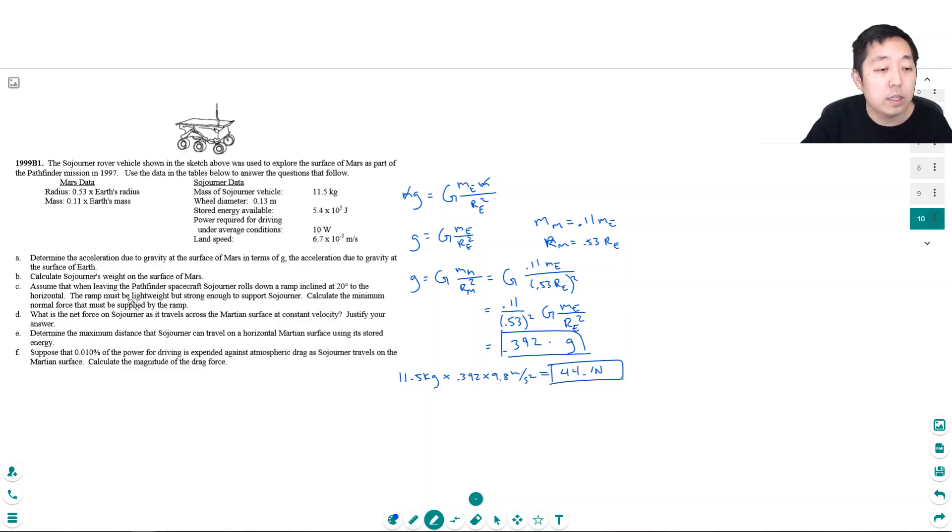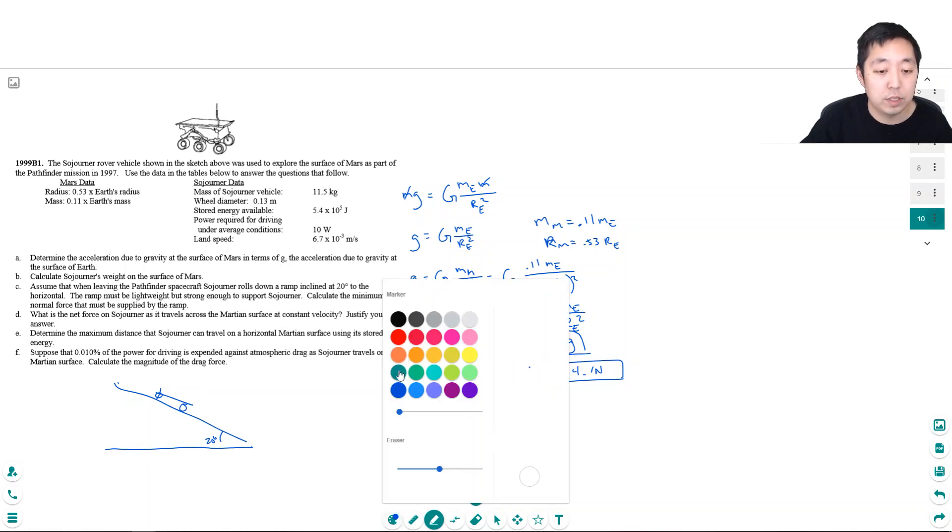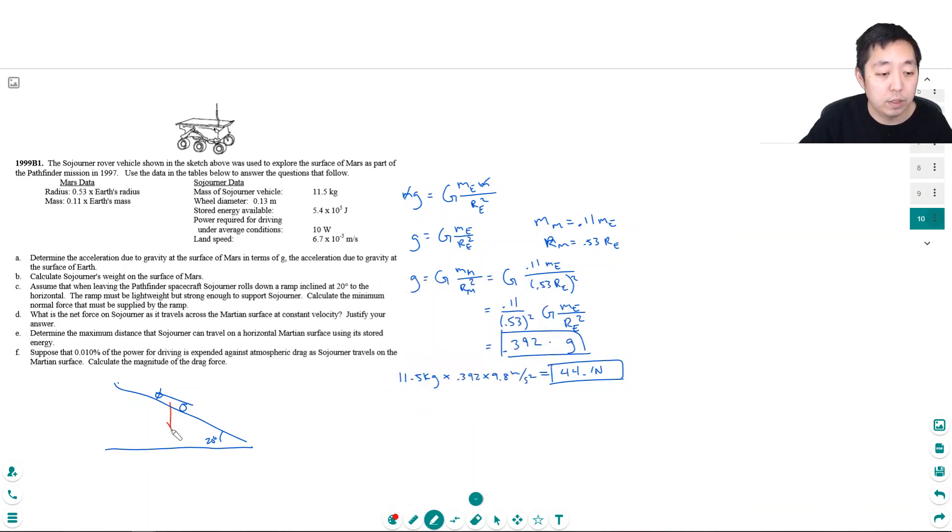Part C: Assume that when leaving the Pathfinder spacecraft, Sojourner rolls down a ramp inclined at 20 degrees to the horizontal. The ramp must be lightweight but strong enough to support Sojourner. Calculate the minimum normal force that may be supplied by the ramp. Okay, so I got to draw a picture here. He's going down this ramp at 20 degrees and we know he's got a, let's do the free body diagram. This force is 44.1 newtons. That's what we decided his weight was. The normal force is this.